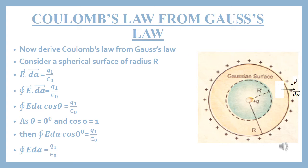अब हम Coulomb's Law को derive करते हैं from Gauss's Law. इसलिए हम एक spherical surface लेते हैं जिसका radius R के बराबर है. हम spherical surface इसलिए लेते हैं ताके symmetry बरकरार रहे — जिसके हर point पे electric field same हो और हर एक point पर electric field और area के दर्मियान same angle हो. हम एक point consider करते हैं जिस पे electric field मालूम करनी है, और इस surface के अंदर एक charge +Q consider करते हैं जो center of the spherical surface पे है, जिसकी वजह से electric field produce होगी. और हम इस point पे electric field निकालना चाहते हैं, तो इसके लिए हम Gauss's Law को apply करेंगे.